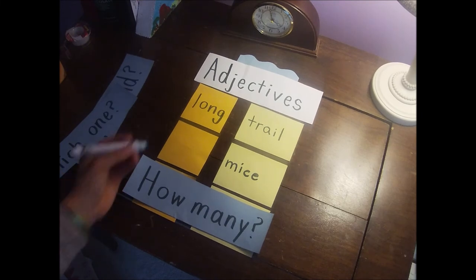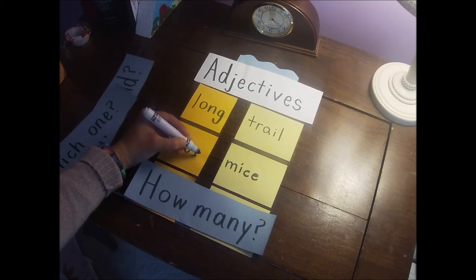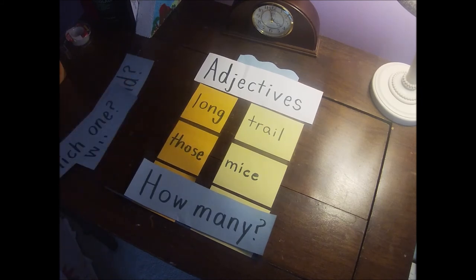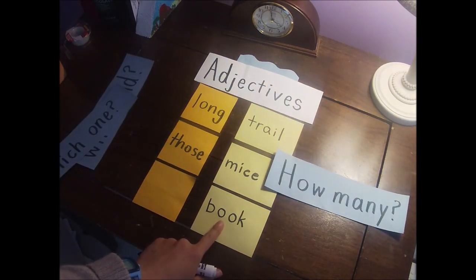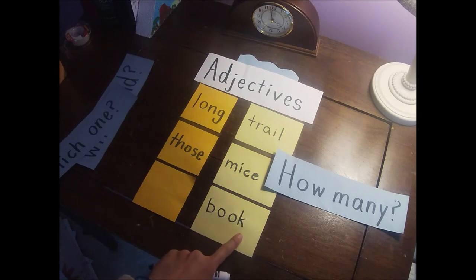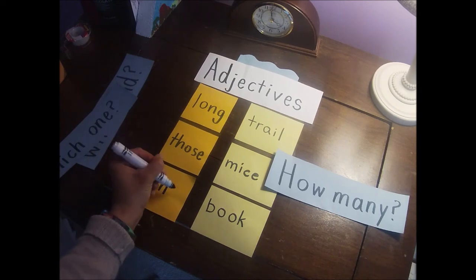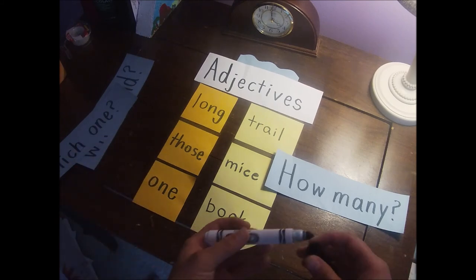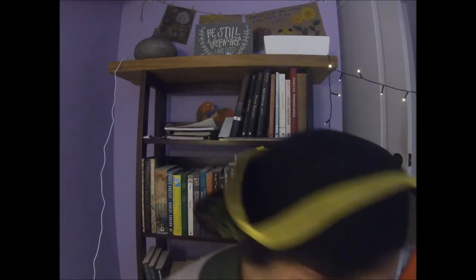How about 'those mice' — those mice. 'Those' is the adjective answering 'which one.' Now, how many? We have 'book.' We can't say 'two book' because then we'd need an s, so 'two books.' Since it's just one book, we can put 'one book.' What kind, which one, and how many — that covers our adjectives.